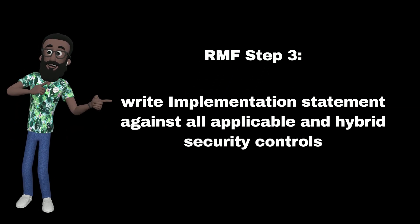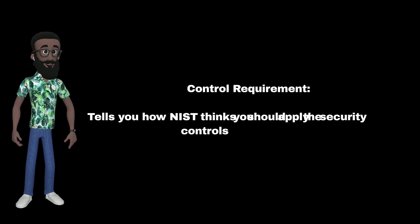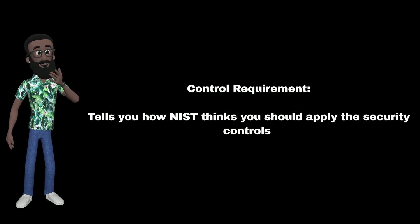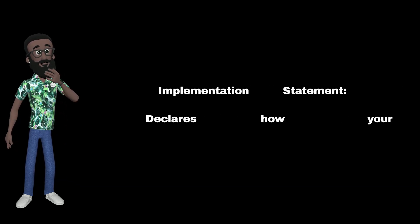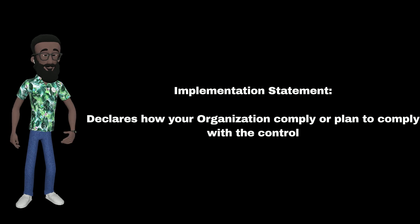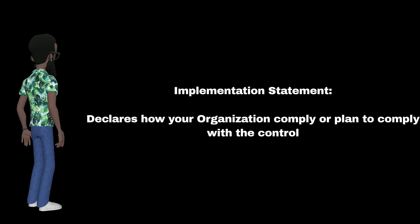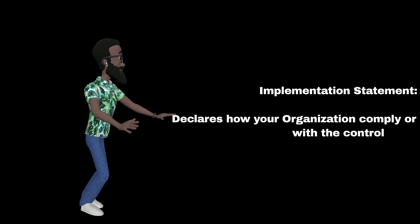RMF Step 3 is where we will write implementation statements against all applicable and hybrid security controls. The control requirement tells you how NIST thinks you should apply the security control; however, the implementation statement declares how your organization complies, or plans to comply, with the control. Let's start by writing a statement for AC-12.